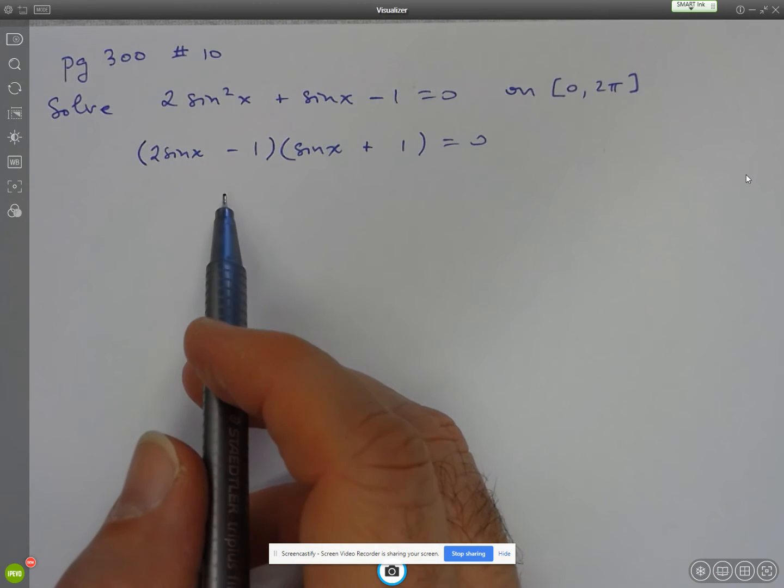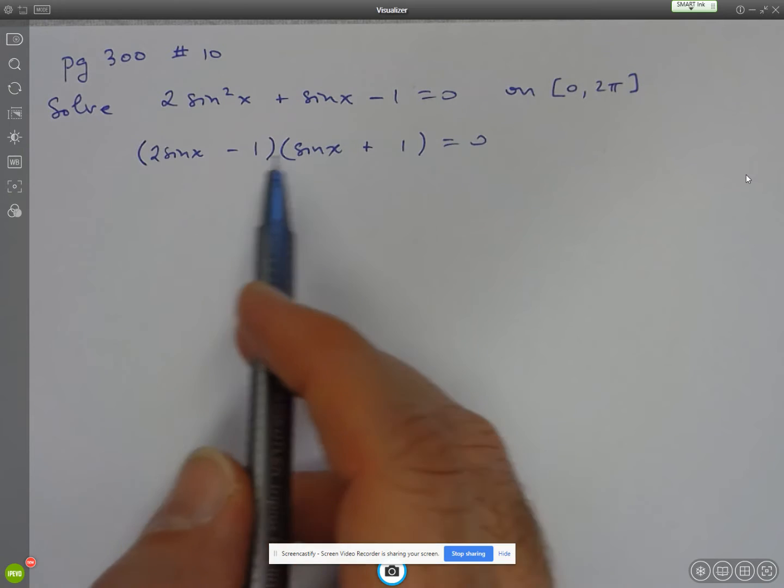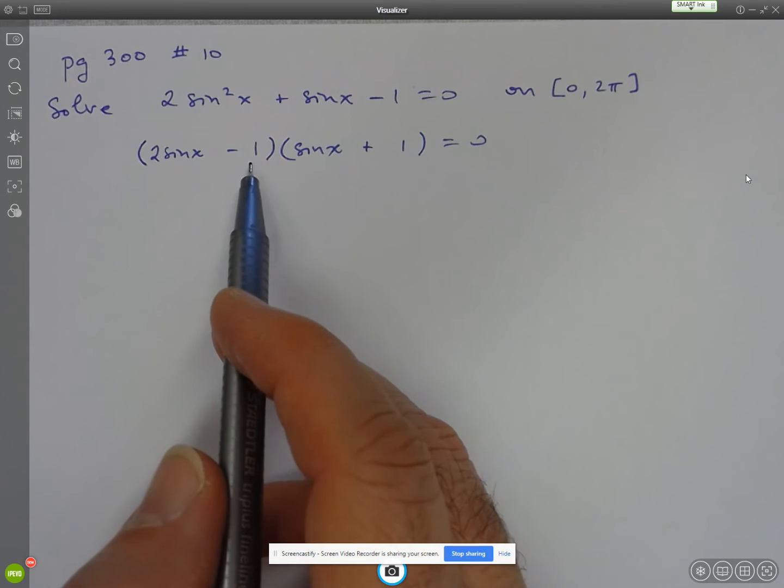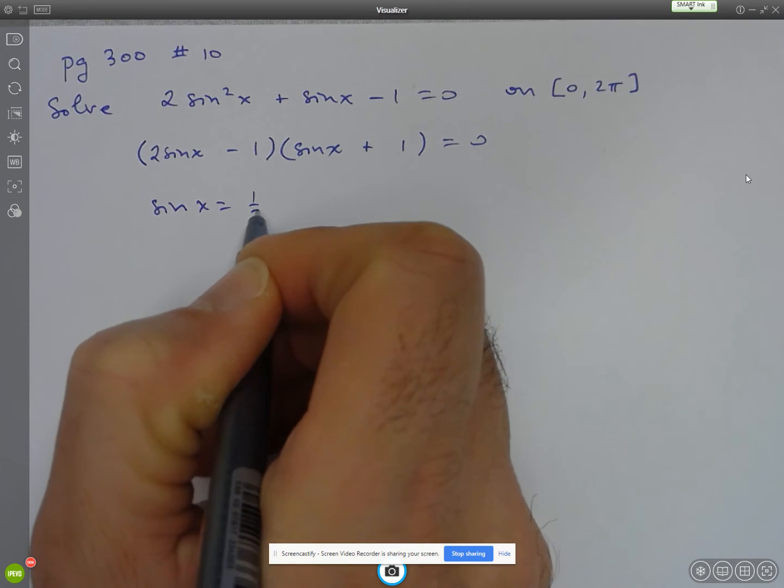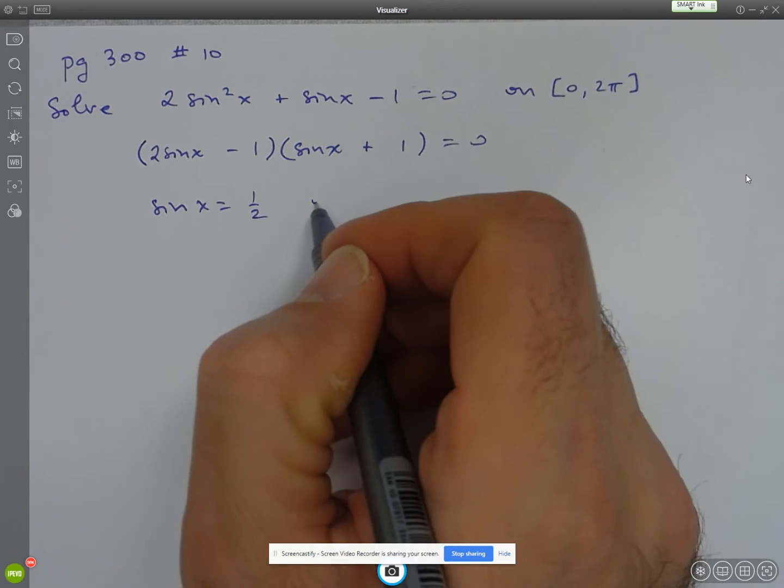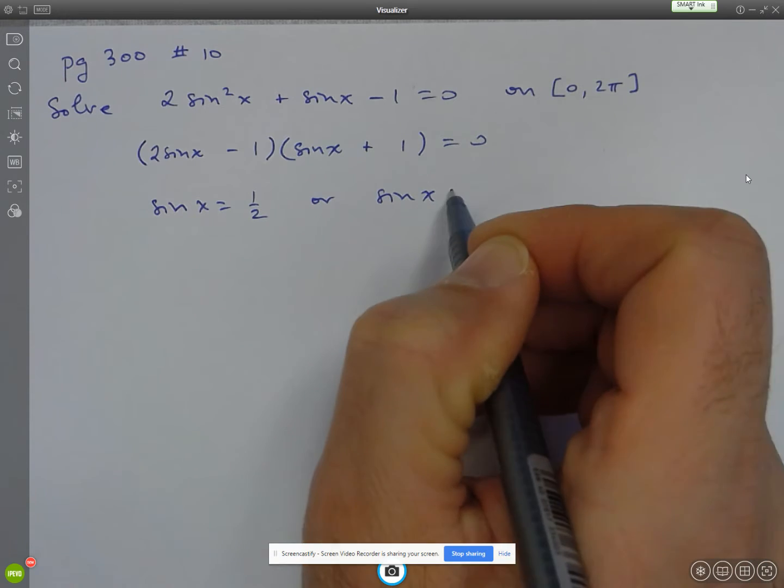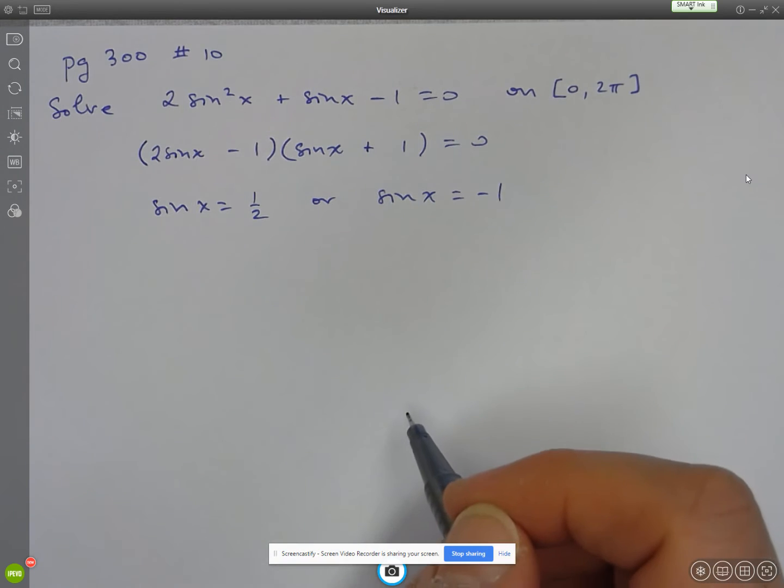And so now I can make both of these equal to 0. So if I solve the first one, I end up with sin x equals 1 half. And here, if I solve sin x plus 1 equals 0, I have that sin x can be equal to negative 1.